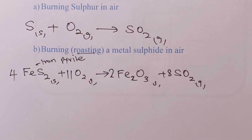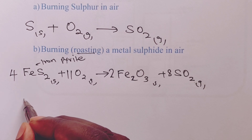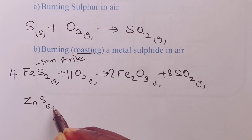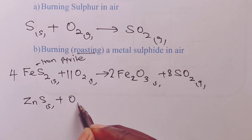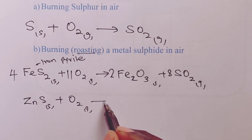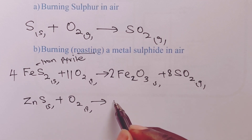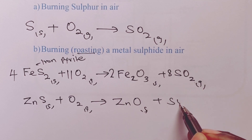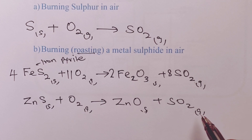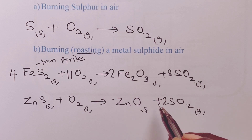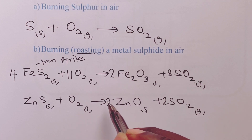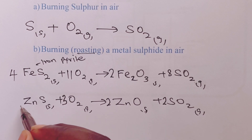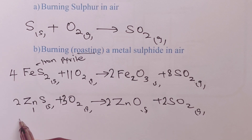Another sulfide we can use is zinc blende, which is zinc sulfide. Heating it in excess oxygen gives zinc oxide together with sulfur dioxide. Balancing with a 2 on zinc sulfide, a 2 on zinc oxide, a 3 on oxygen, and a 2 on sulfur dioxide.